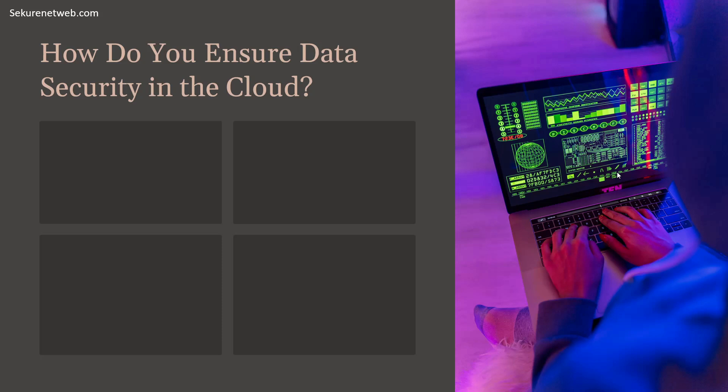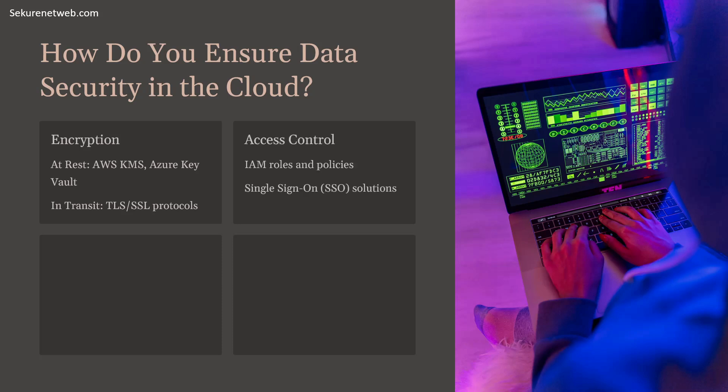Question number two: how do you ensure data security in the cloud? Data security in the cloud involves multiple layers of protection. Key strategies include encryption — for encryption at rest, use services like AWS KMS or Azure Key Vault to manage encryption keys. For encryption in transit, implement TLS or SSL protocols to secure data as it moves between clients and servers.